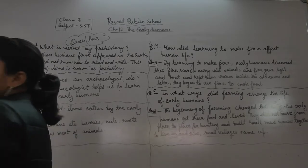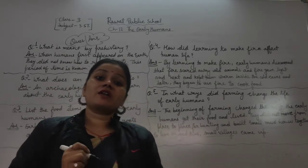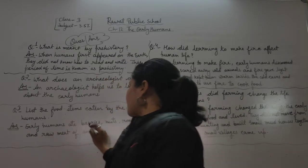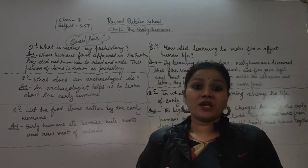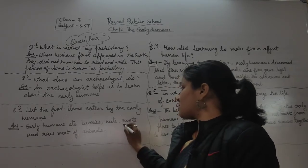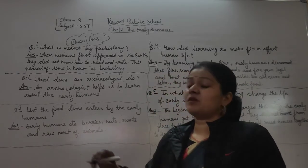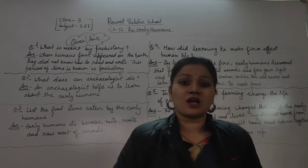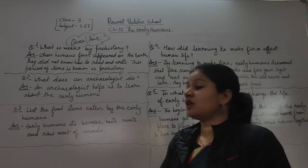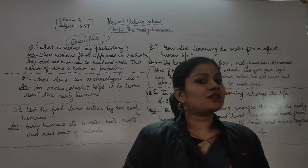Question number three: List the food items eaten by the early humans. Early humans jo food items khaate the woh yeh hain: roots, raw meat of animals — kyunki us time fire nahi tha, isliye woh kachcha maas khaate the — raw vegetables, and raw fruits.